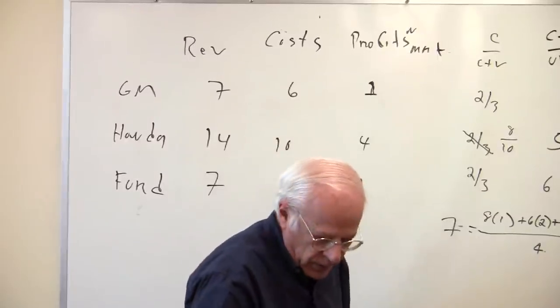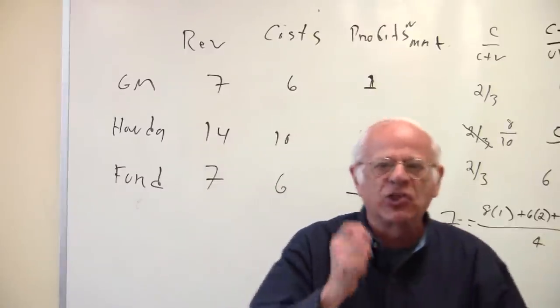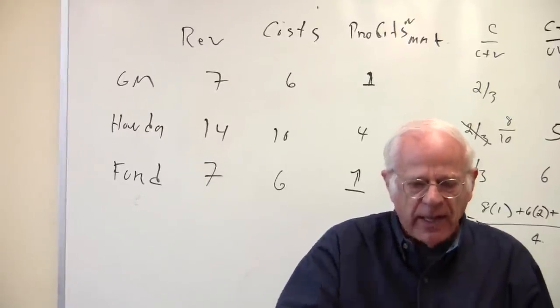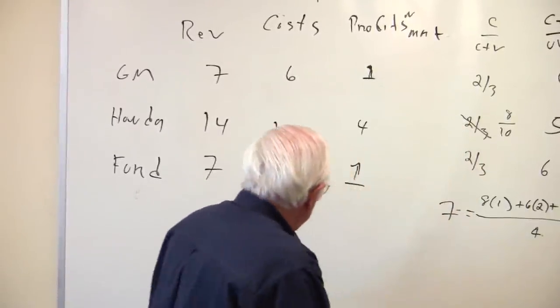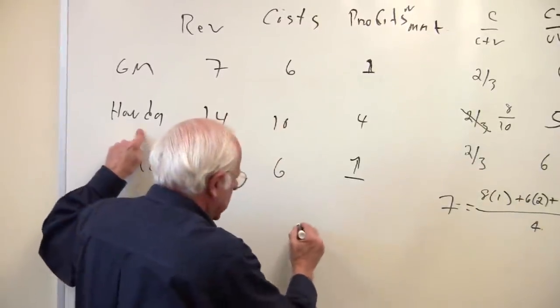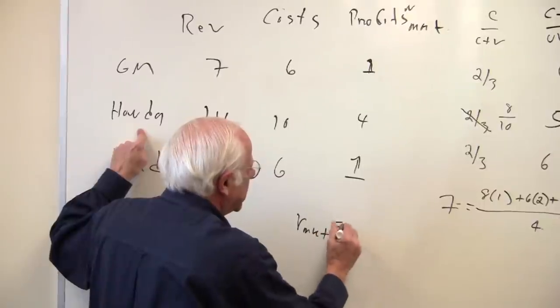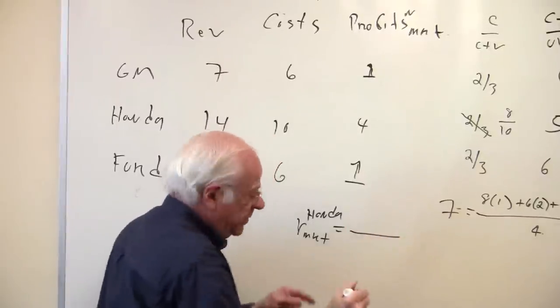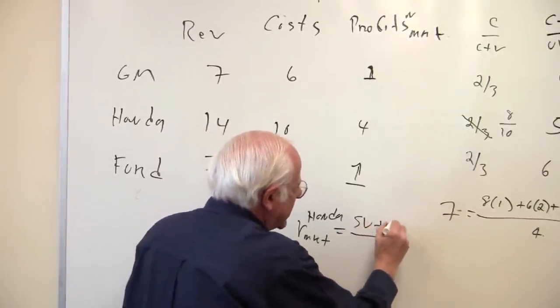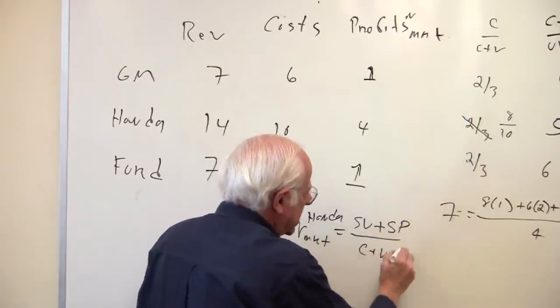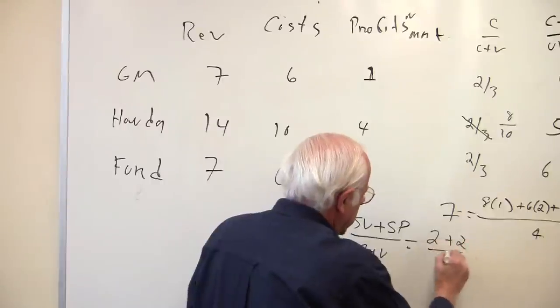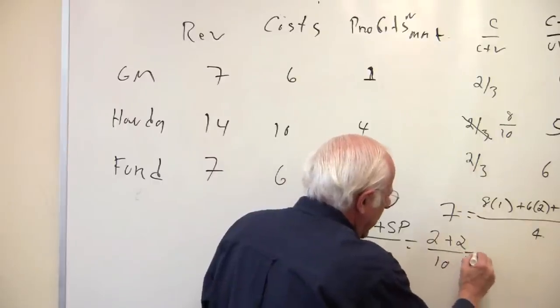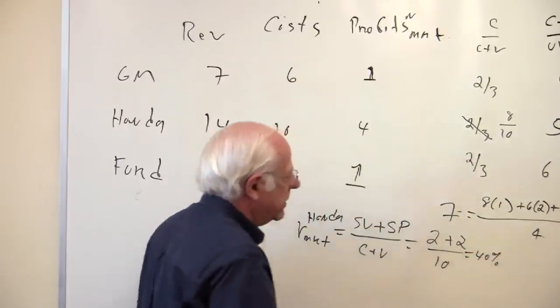So Marx calls this extra $2 for Honda a super profit. Super profit is the result of market competition. And there, the rate of profit goes up for Honda, this market rate of profit goes up for Honda, because it's getting its surplus value as it did before, plus this super profit, divided by the C plus V. So it's getting 2 plus 2 divided by 8 plus 2 is 10, so its rate of profit goes up to 40%, 4 over 10.